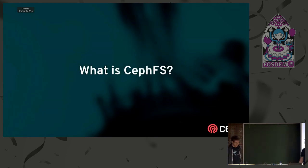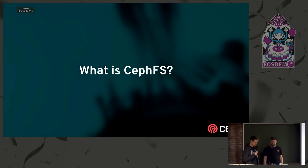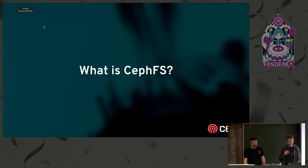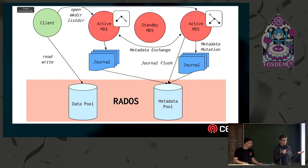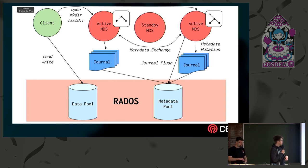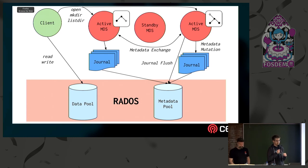Just a brief introduction to CephFS for those who don't know: CephFS is a POSIX distributed file system. It's the oldest storage application that runs on Ceph, the original use case around 2005. It's a cooperative file system with clients. In particular, the clients have direct access to the object storage devices — they're able to read and write file data blocks themselves. They don't have to go through any kind of metadata server.